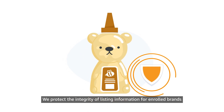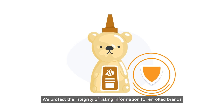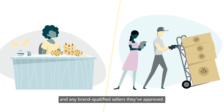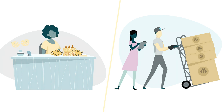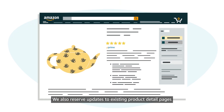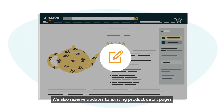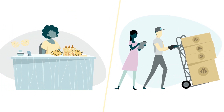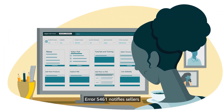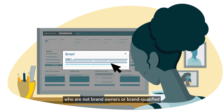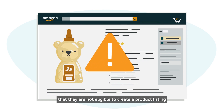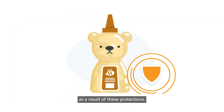Amazon protects the integrity of listing information for enrolled brands by reserving the creation of new product detail pages for the brand owner and any brand-qualified sellers they've approved. Updates to existing product detail pages are also reserved for brand owners and brand-qualified sellers. Error 5461 notifies sellers who are not brand owners or brand-qualified that they are not eligible to create a product listing as a result of these protections.